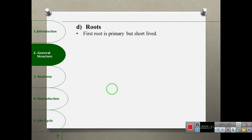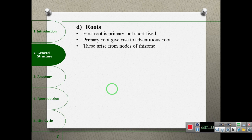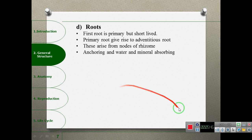The first root is primary and short-lived. Then adventitious roots develop from all nodes of the rhizome. These roots provide anchoring and mineral absorption.